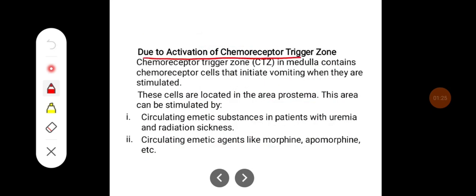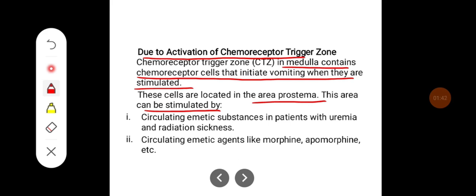The second pathway is activation of the chemoreceptor trigger zone (CTZ). The CTZ is present in the medulla and contains chemoreceptor cells that initiate vomiting when stimulated. These cells are located in the area postrema. This area can be stimulated by circulating emetic substances in patients with uremia and radiation sickness.